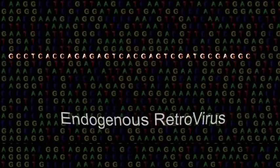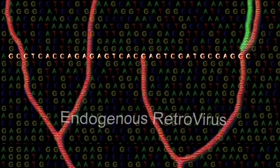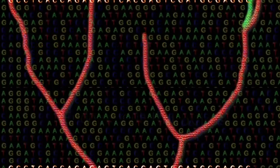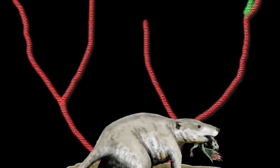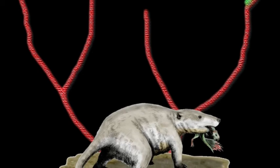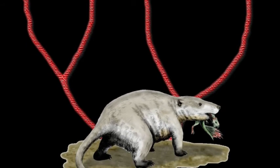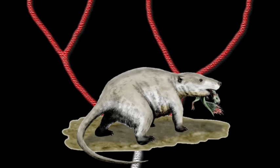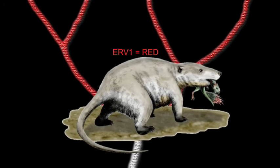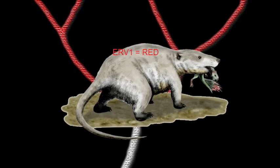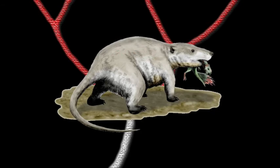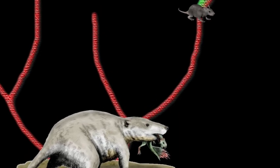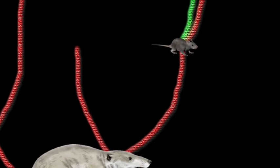Let's examine how endogenous retroviruses, or ERVs, would behave within a model of evolution by common descent. Suppose an ancient creature, let's call it Primus Mammalius, is the common ancestor of all modern mammals, and is infected by a retrovirus that becomes endogenous. All of the Primus descendants would be expected to carry the same ERV — let's call it ERV-1 — in the same chromosomal location.